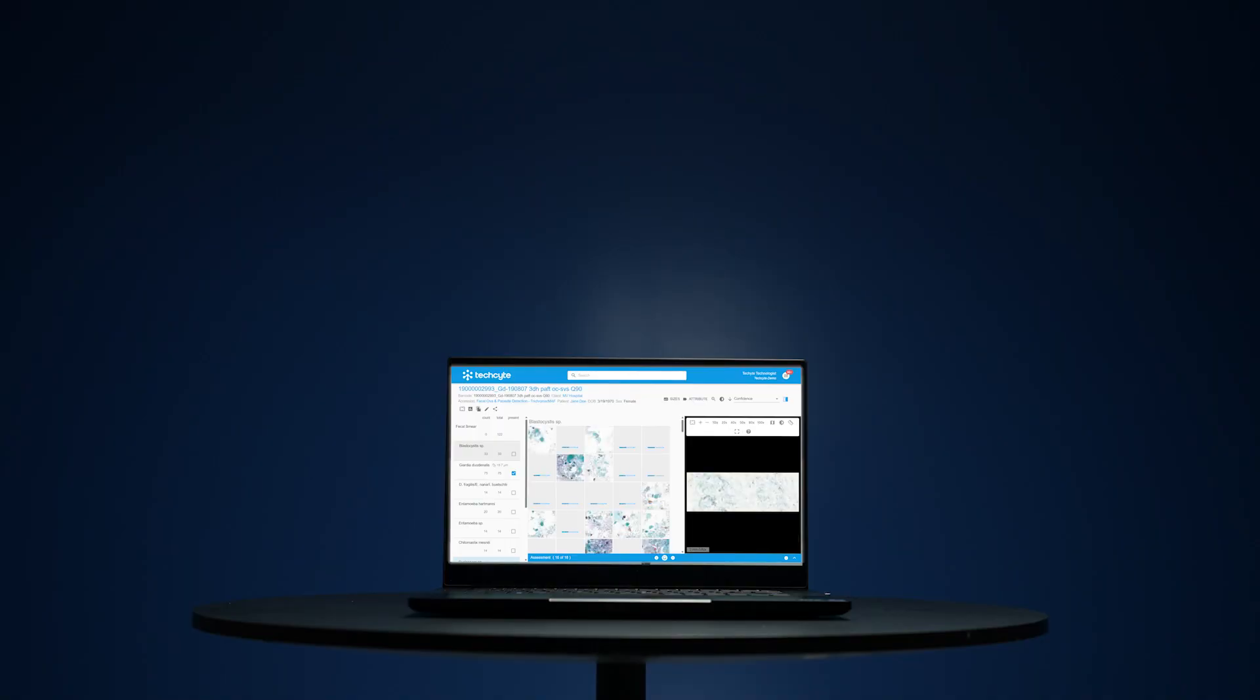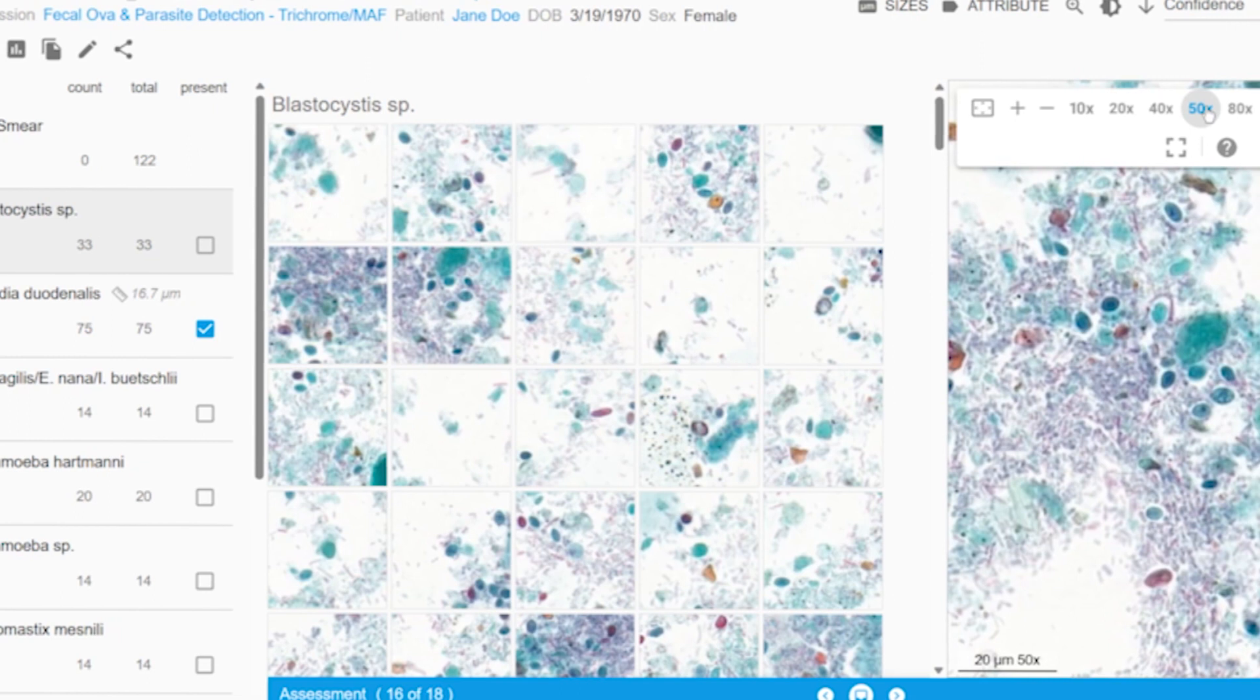It learns very much like we learn. Each image is broken down into thousands of features. All the model is seeing is those textures and features, that's the class of Entamoeba.